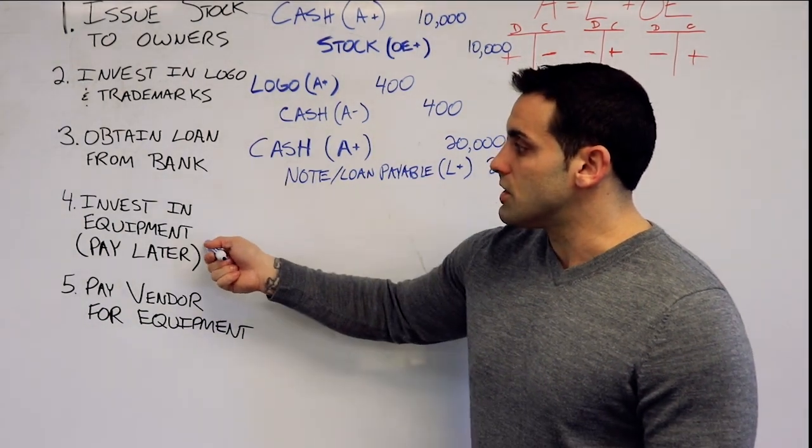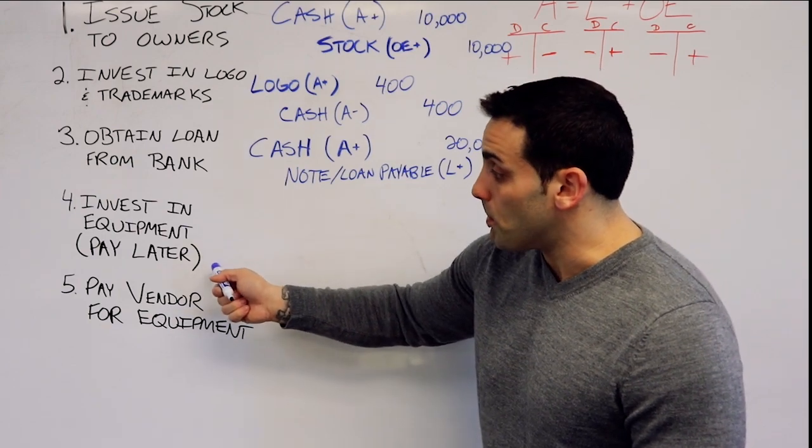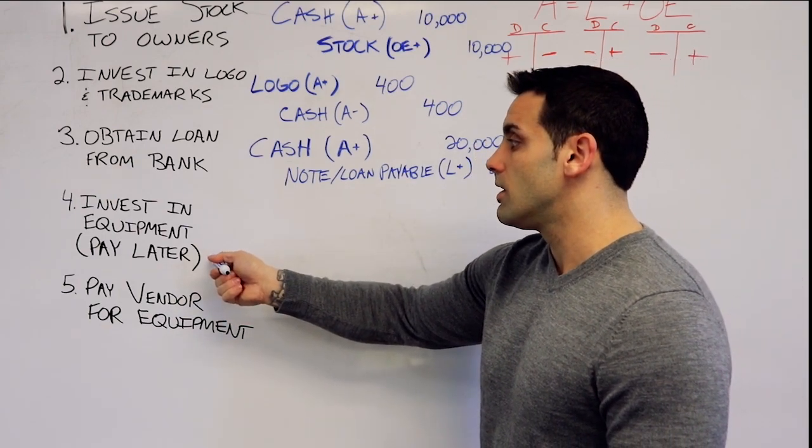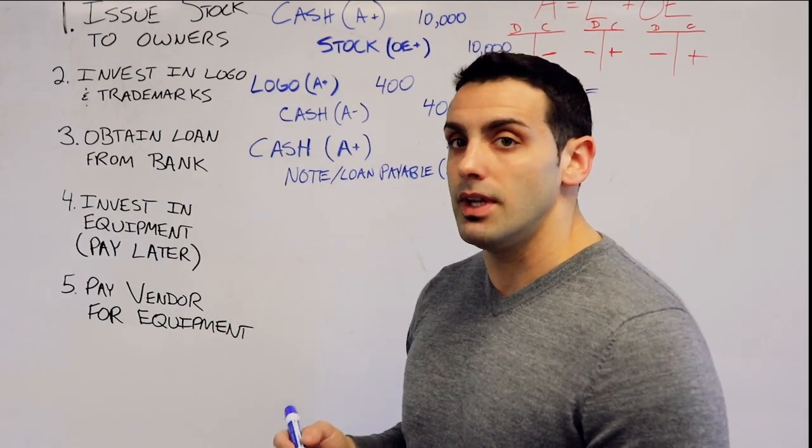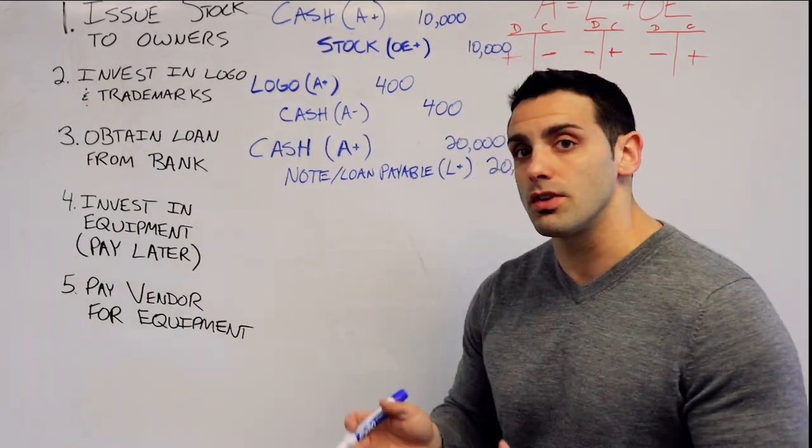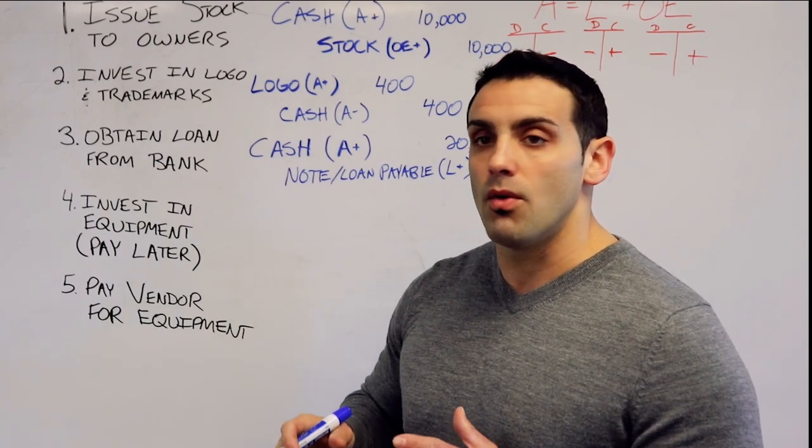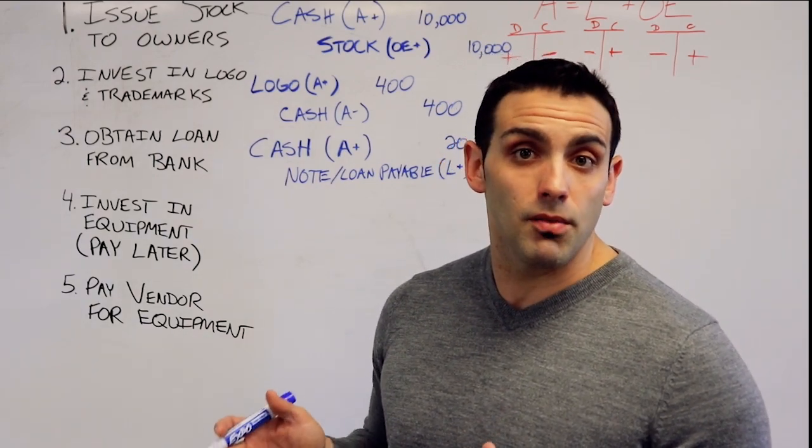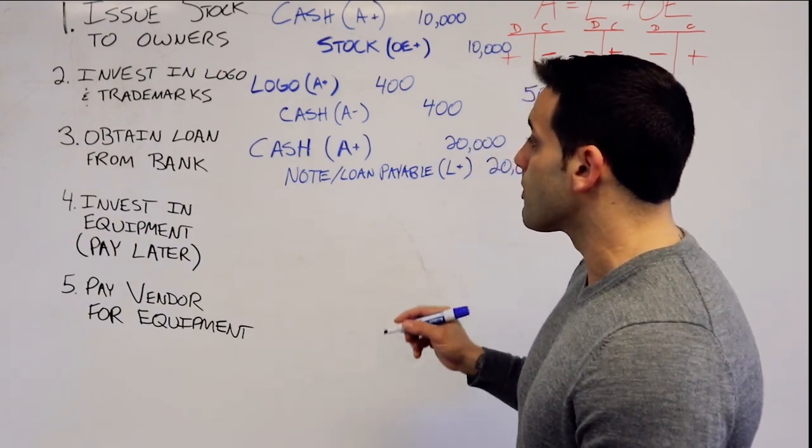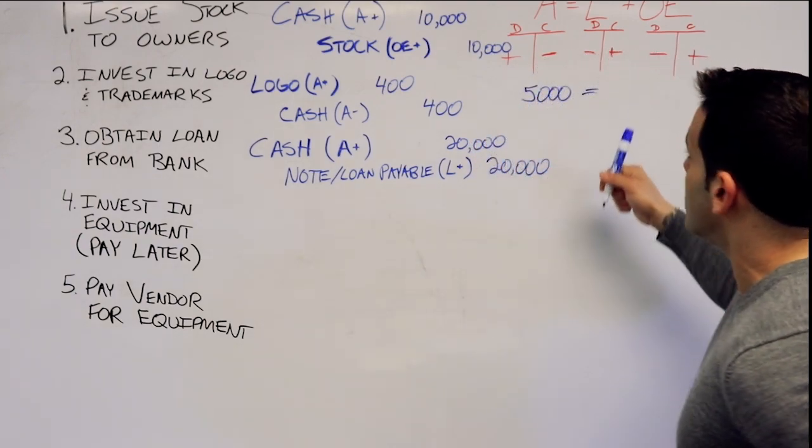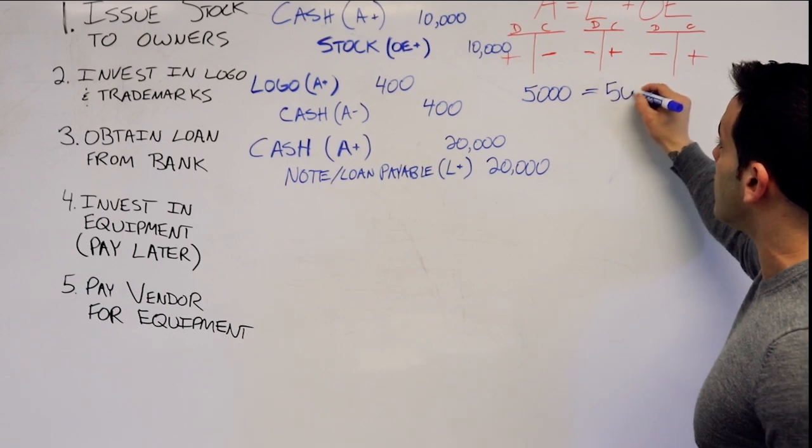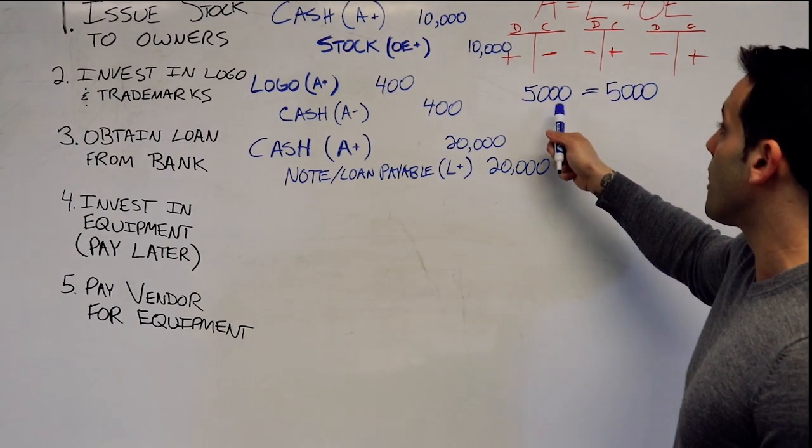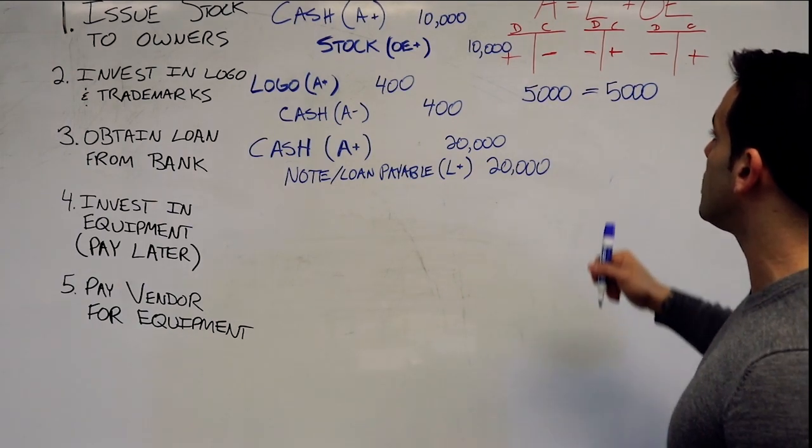But since we're investing in equipment but paying later, we're going to also incur an account payable. Now it's different from a note because it's short term. It's something we pay within the next 30, 60, 90 days, definitely within the next year. So accounts payable is a liability and we're going to increase the liability with that loan payable. So does the equation balance? Yes, it does.